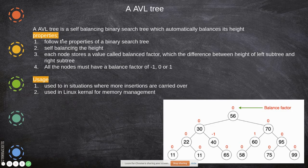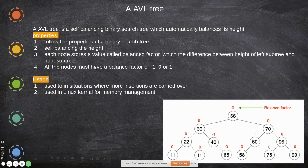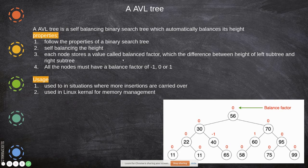An AVL tree is a self-balancing binary search tree. It automatically balances its height. It follows all the properties of a binary search tree — left child should be smaller and right child greater than the parent — and additionally it self-balances the height. Each node stores a value called the balance factor.